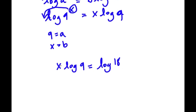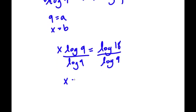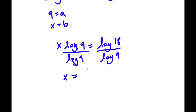Now we want to isolate x, so I'm going to go ahead and divide by log 9 on both sides. So now I have x is equal to — because these two cancel out — log 18 over log 9.